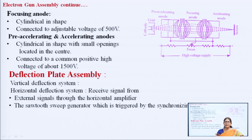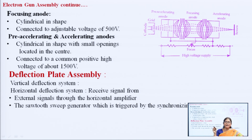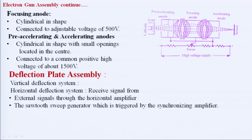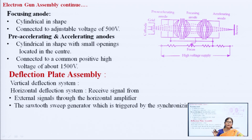The focusing anode is cylinder-shaped and is kept at 500 volts with a variable voltage. By varying the voltage of the focusing anode, we can change the focus of the electron beam striking the screen. The pre-accelerating and accelerating anodes are kept at 1500 volts. The vertical deflection system receives the unknown input signal and feeds it to the vertical plates. The horizontal deflection system receives signals either from the unknown signal applied at the vertical deflection plate or from external sources such as a horizontal amplifier.